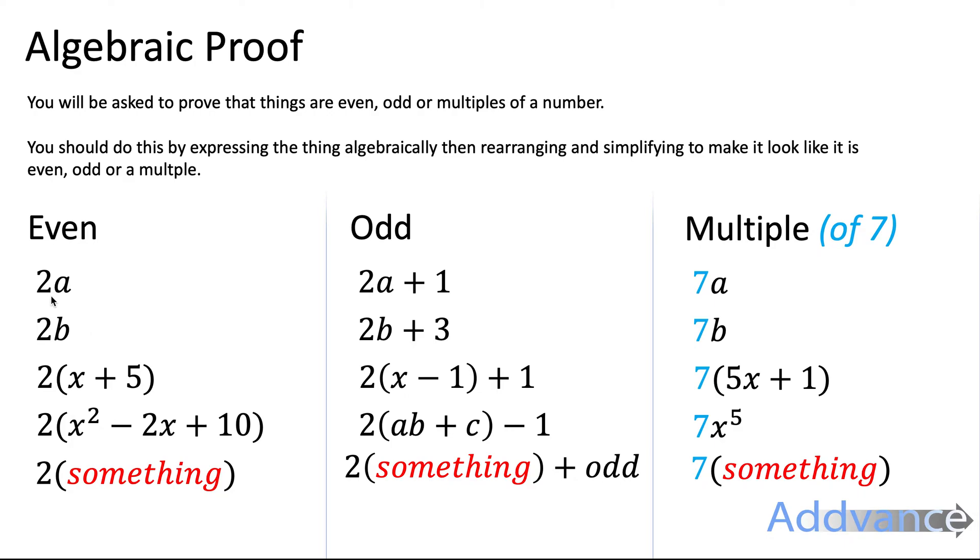For example, even numbers are 2 times something. So it would be 2 times a, 2 times b, 2 times x plus 5, it's 2 times anything.